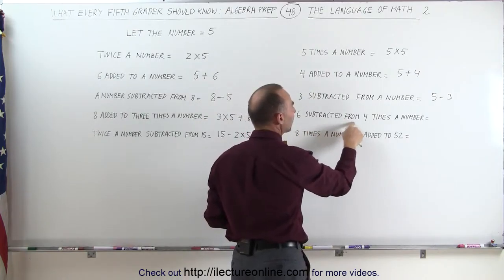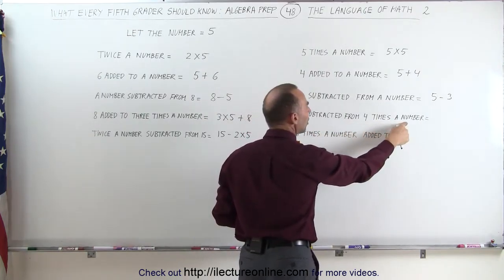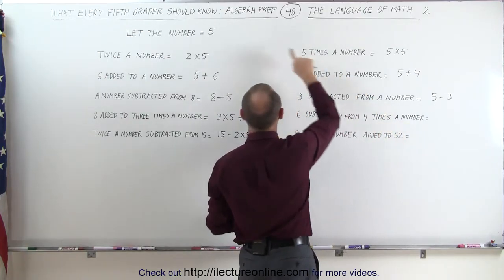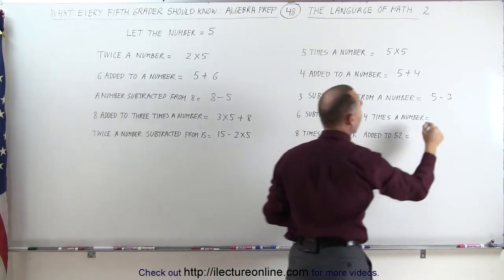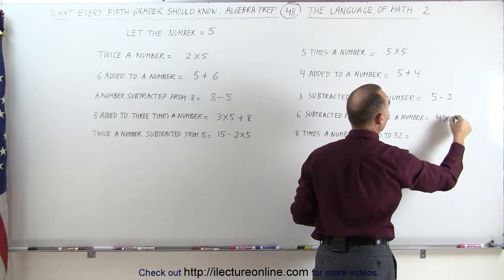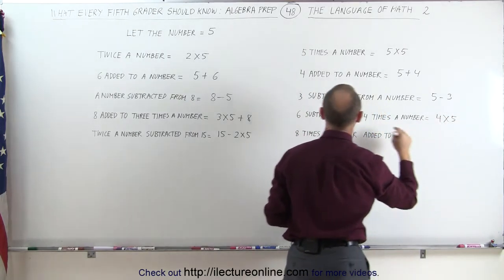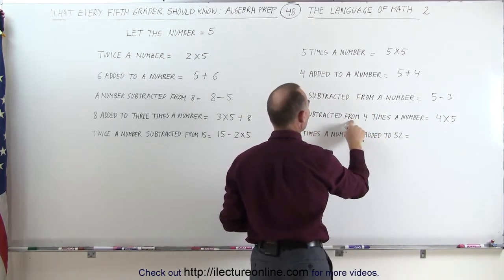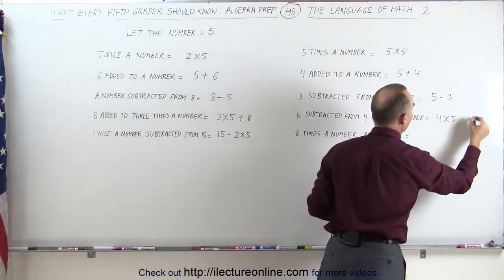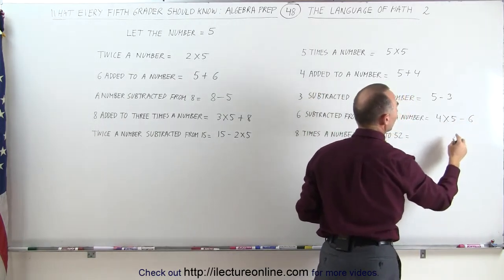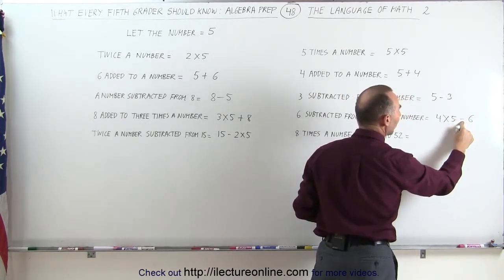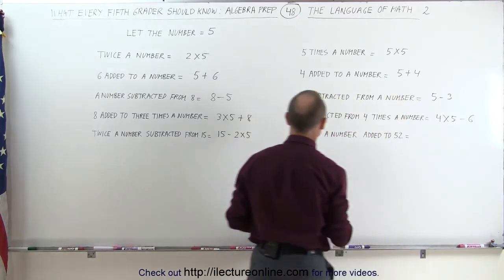6 subtracted from 4 times the number. 4 times the number — if the number is 5, we write that first: 4 times 5. And then we subtract from that the number 6, minus 6. This means 6 subtracted from 4 times the number.